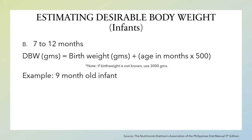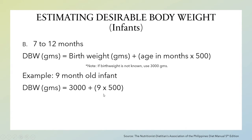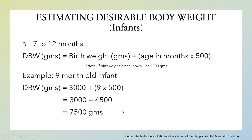For example, a nine-month-old infant: the desirable body weight in grams equals 3000 plus 9 times 500. Since 9 times 500 equals 4500 grams, then 3000 plus 4500 equals 7500 grams.